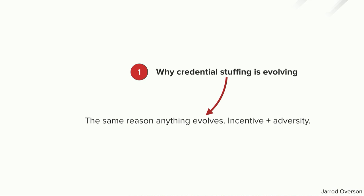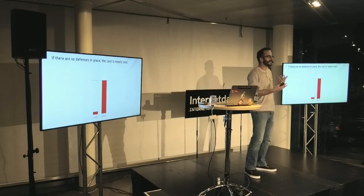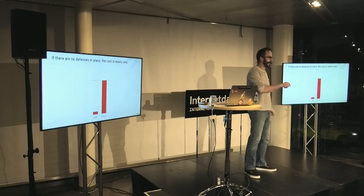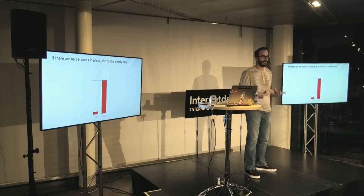Something is in the way of credential stuffers and there is incentive to move past those blocks. If there was nothing blocking a credential stuffer, there would be no incentive to evolve — they would just stay at the same level. And if it wasn't valuable enough, they wouldn't bother evolving. Pierre Antoine talked a little bit about increasing the cost for attackers yesterday, and this is an important point for attacks going through an open door like a login portal. When you have no defenses, you have a cost of essentially nothing.